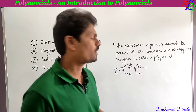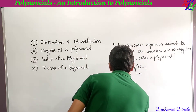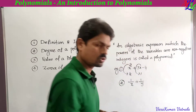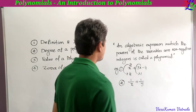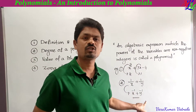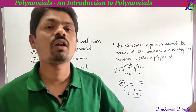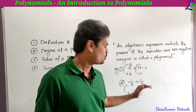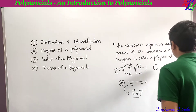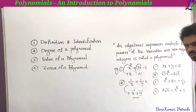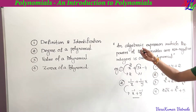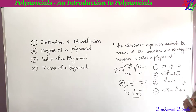For example, 1/x + 1/y can be written as x⁻¹ + y⁻¹. Here the power of the variable is −1, which is negative, so this is not a polynomial. As a student exercise, you have to say whether given expressions are polynomials or not, depending on the definition of the polynomial.